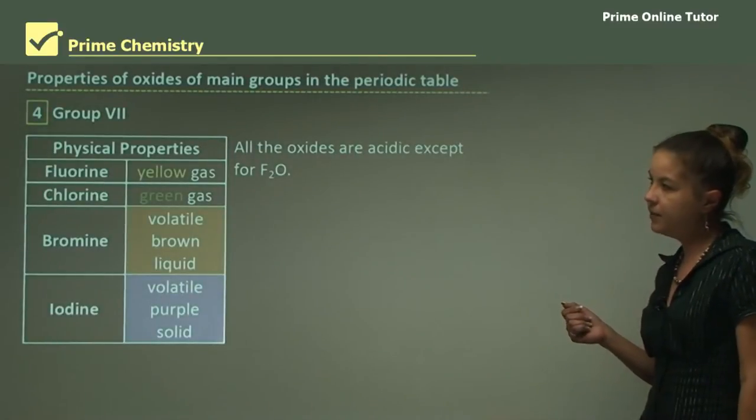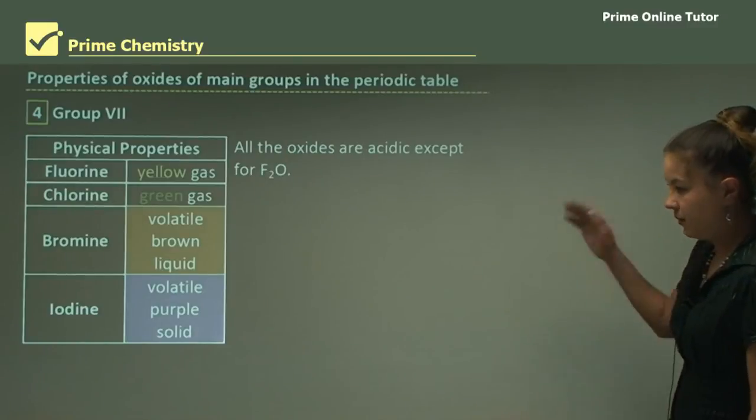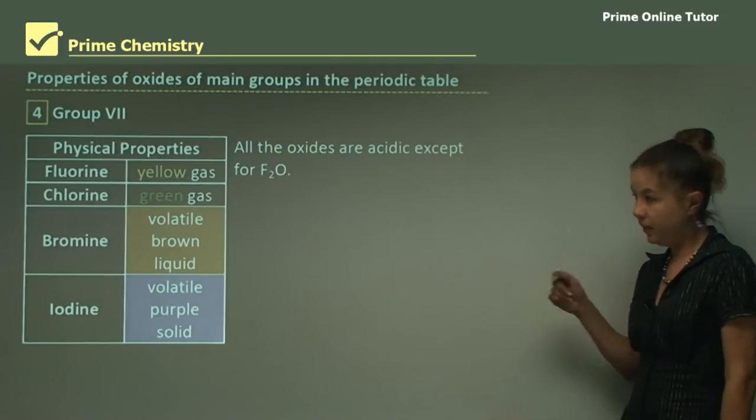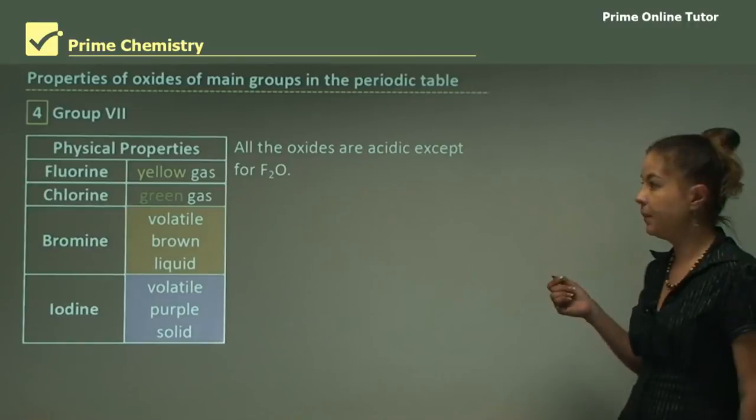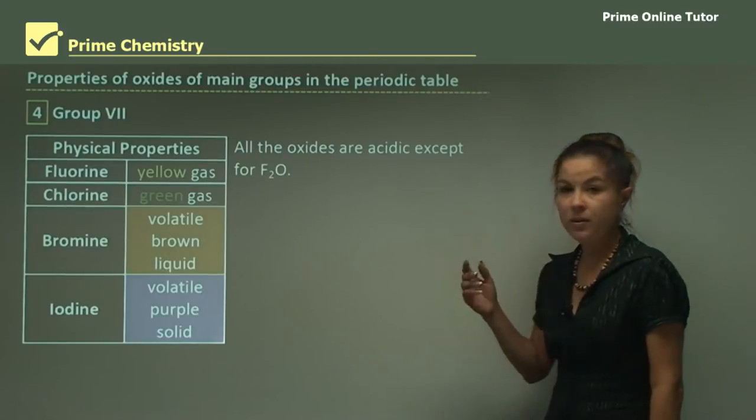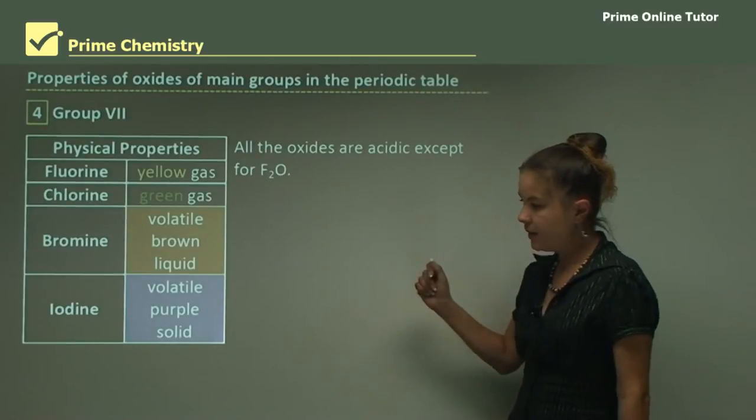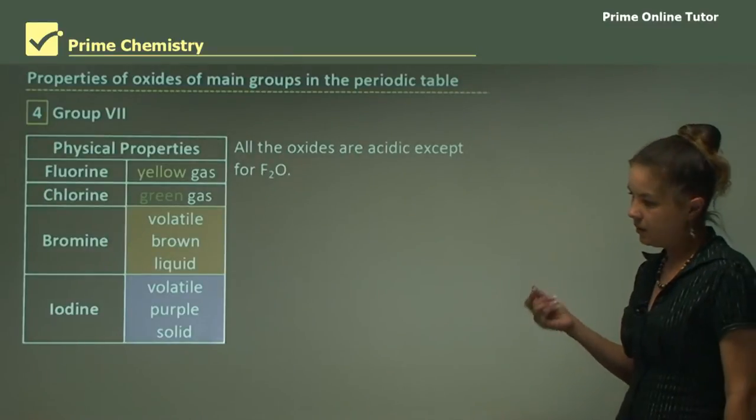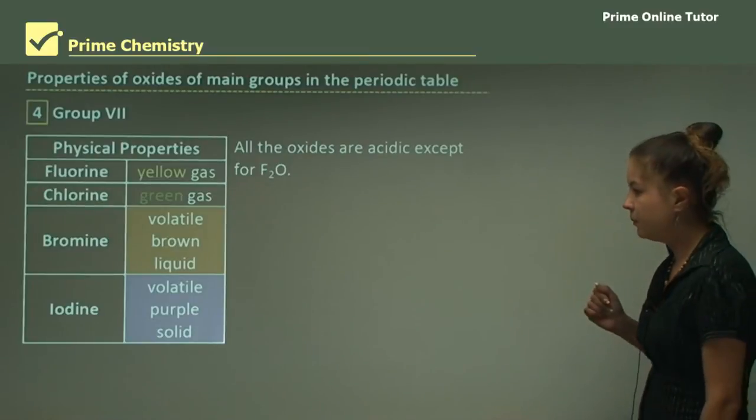Now onto Group 7. Here I've got a table of the physical properties so we can recap all of them at once. All oxides of Group 7 are acidic except for F2O, fluorine. Looking at the physical properties at room temperature: fluorine is a yellow gas, chlorine is a green gas, very acrid green gas, you do not want to breathe chlorine gas, you may have smelt it as a pool chemical. Bromine is a volatile brown liquid and iodine is a volatile purple solid. It can be dissolved in water and used as an antibacterial agent. If you cut yourself or have a wound, you can use brown iodine to help fix that up.